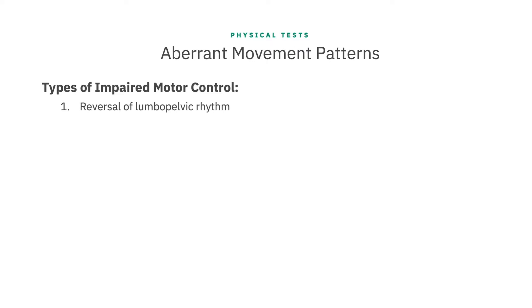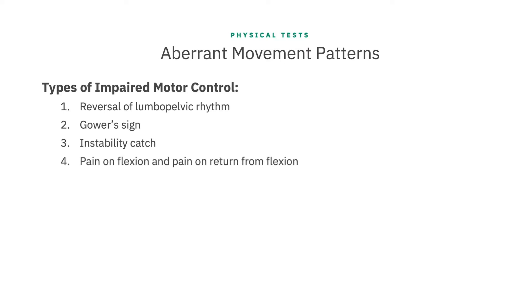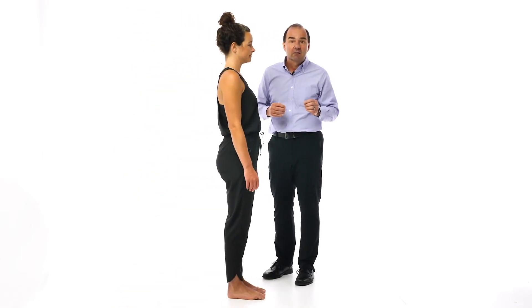These are: reversal of the lumbopelvic rhythm, Gower sign, an instability catch, pain on flexion, and pain on return from flexion. So we'll bring in Mimi and go through the primary things you're looking for during the aberrant movement testing.